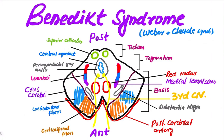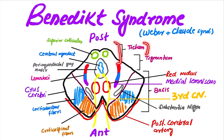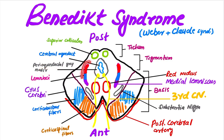This is the cross-section of the midbrain at the level of the superior colliculus. This is the anterior portion and this is the posterior portion. This portion is tectum, this portion is tegmentum, and this portion is basis — containing the crus cerebri, corticobulbar fibers, and corticospinal fibers. These structures are the superior colliculi, this is the cerebral aqueduct, and this area is the periaqueductal gray matter. These are the lemnisci.